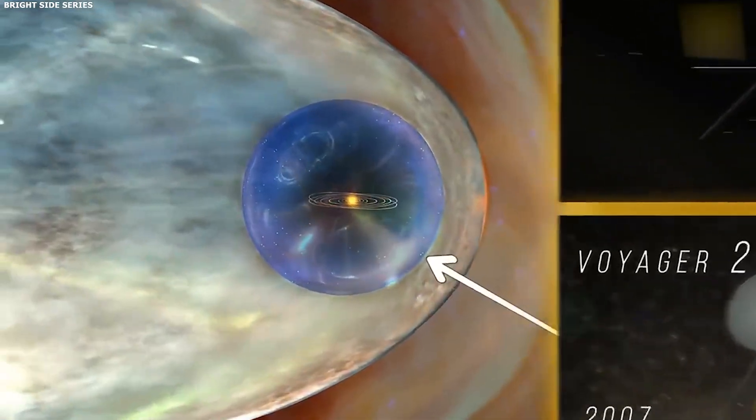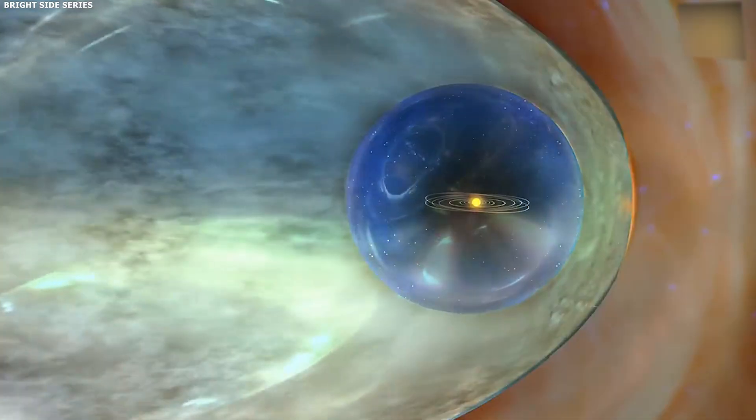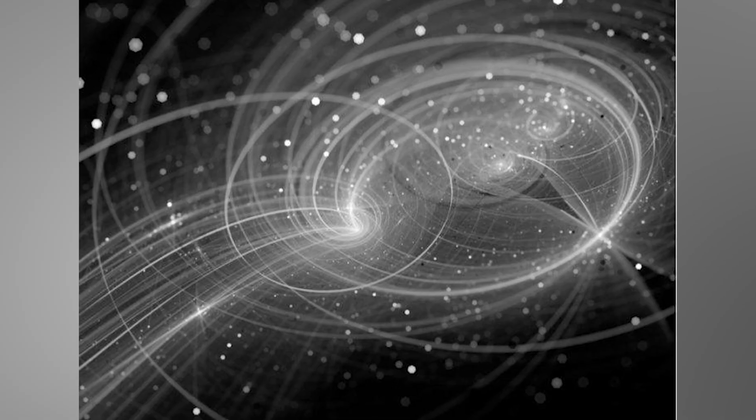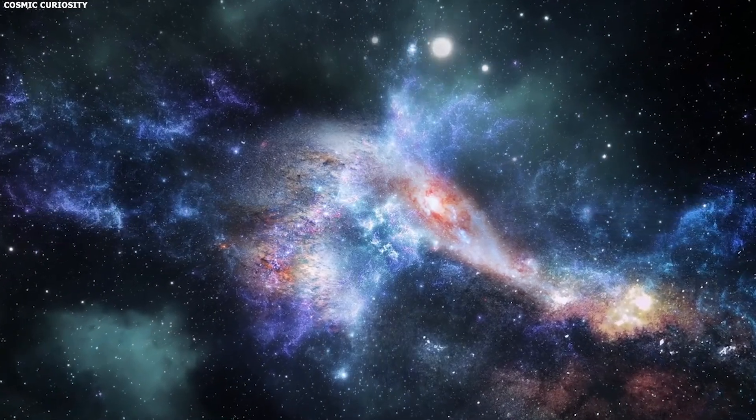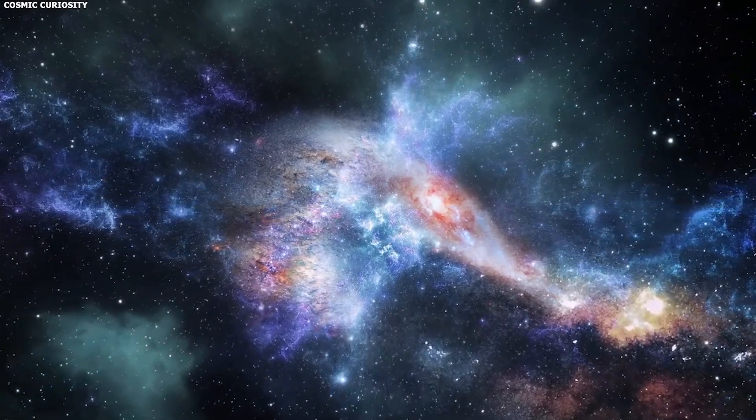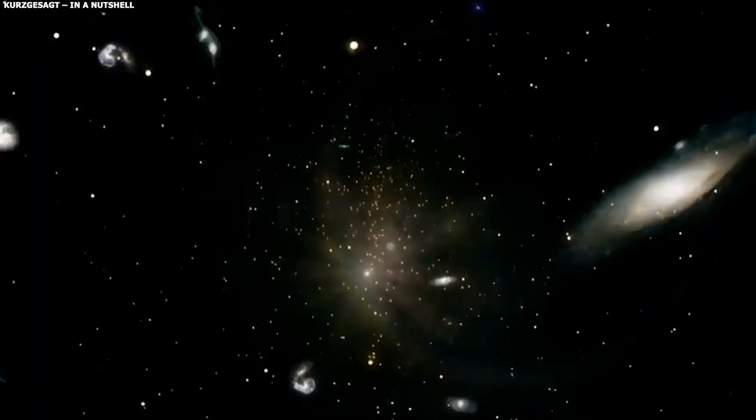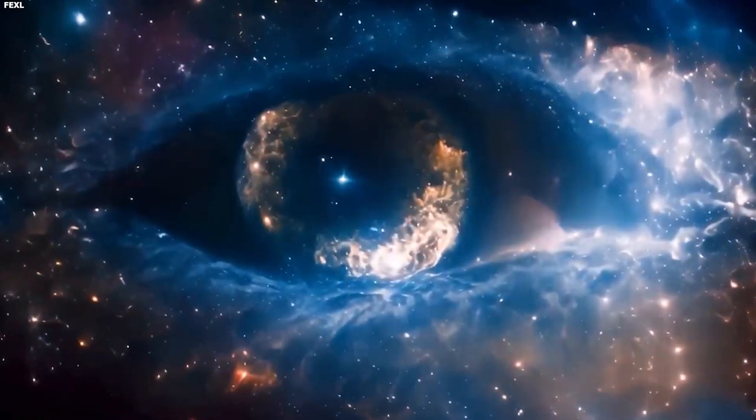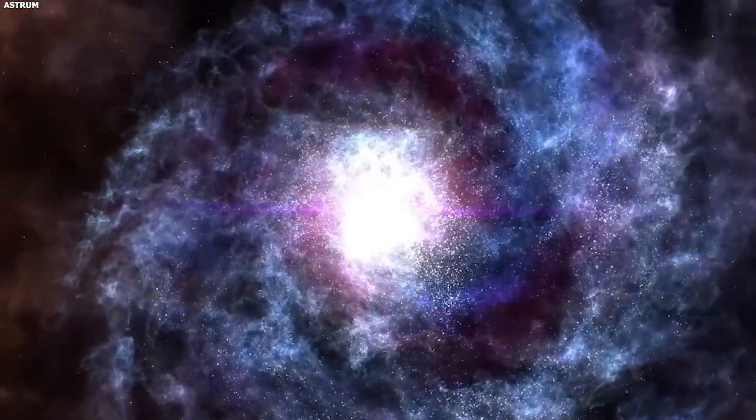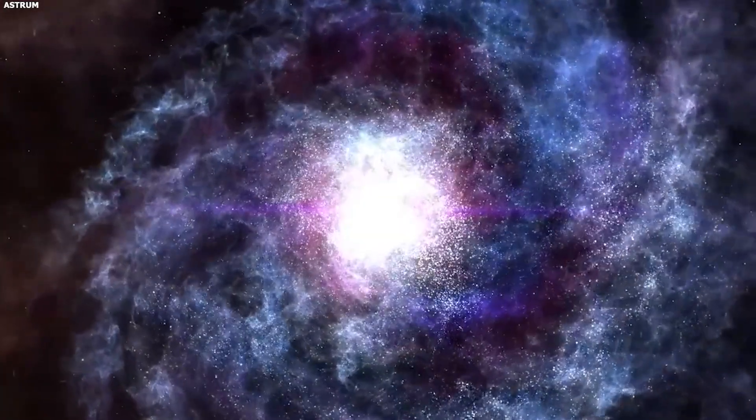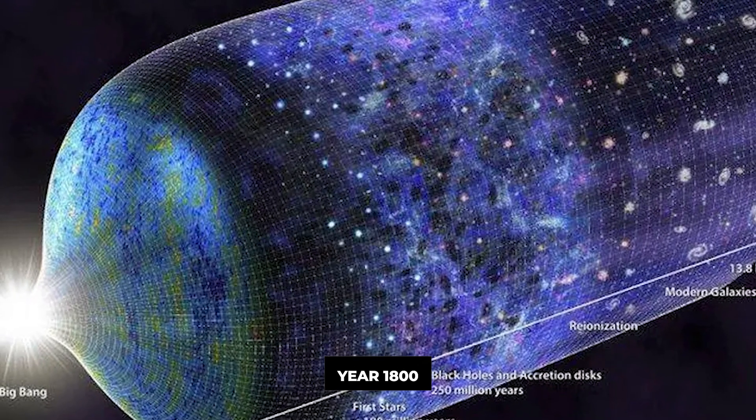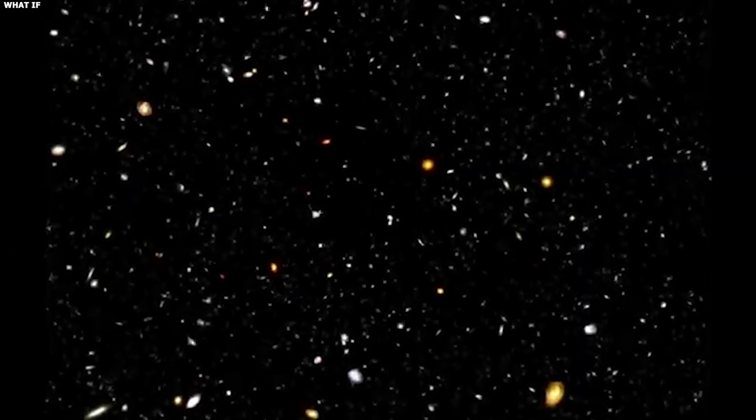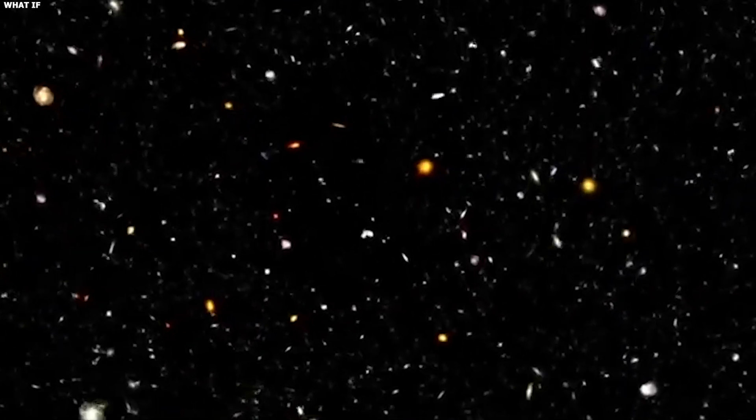But it gets stranger. When astronomers analyzed the light from these early galaxies, they found heavy elements: carbon, oxygen, nitrogen. Elements that can only be created inside stars and then scattered into space when those stars explode. Which means that entire generations of stars had to have already lived and died before these galaxies even formed. It's like opening a time capsule from the year 1800 and finding a smartphone inside. The technology shouldn't exist yet.